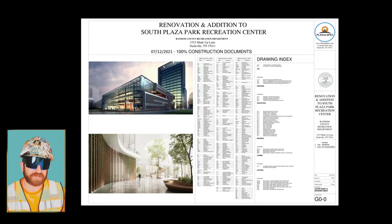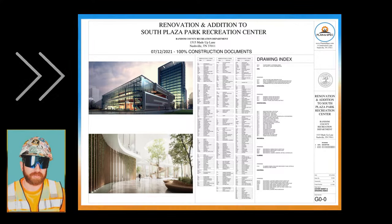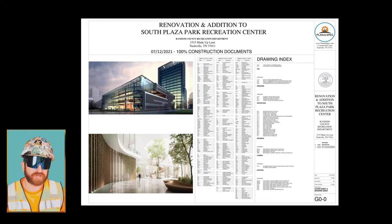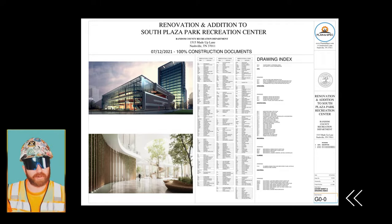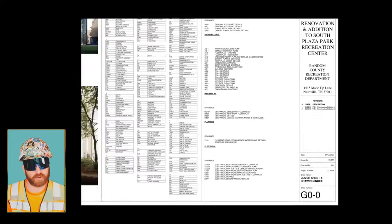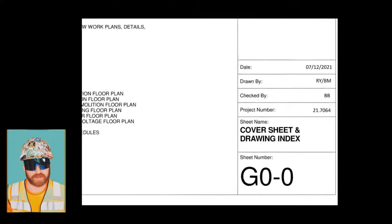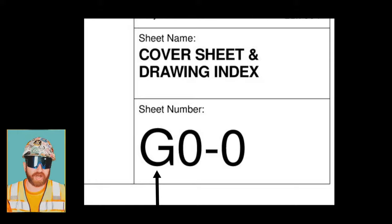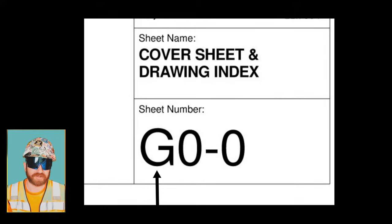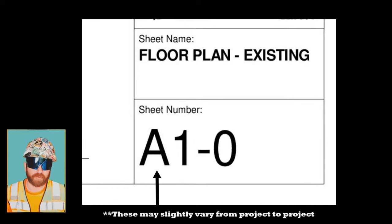Now that we understand that these sections exist, let's talk about the drawings. Each page or sheet has a number associated with it, located in the bottom right-hand corner of the page, which tells you which section or series you're in. If you want the general series, look for the sheet starting with G. For the architectural series, look for the sheet starting with A.